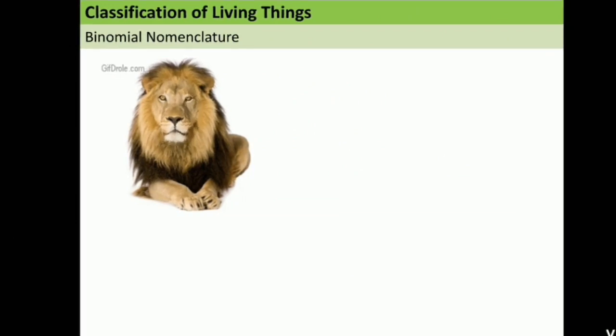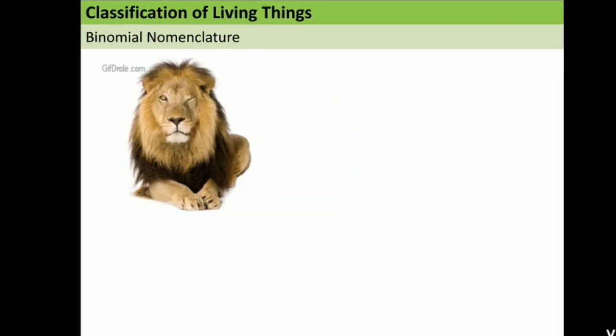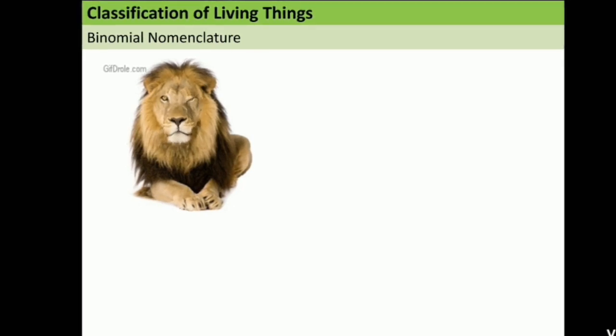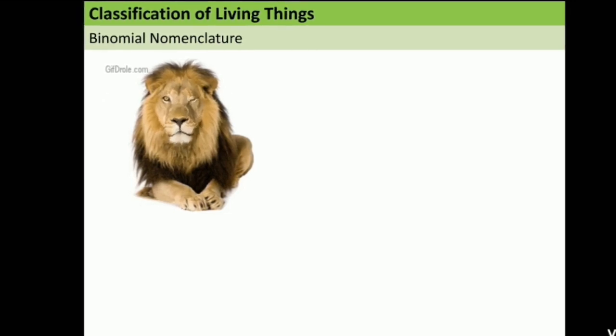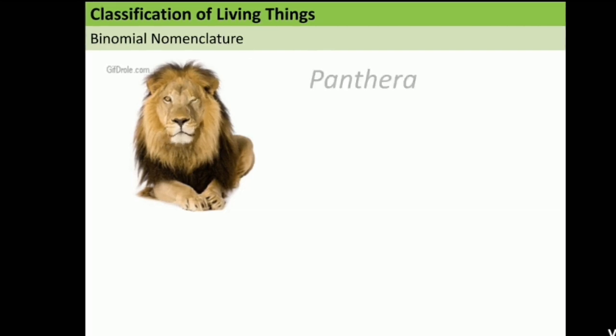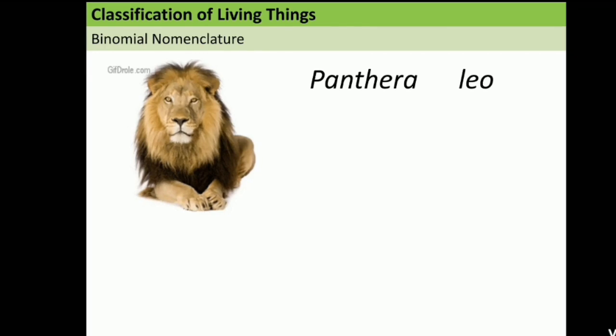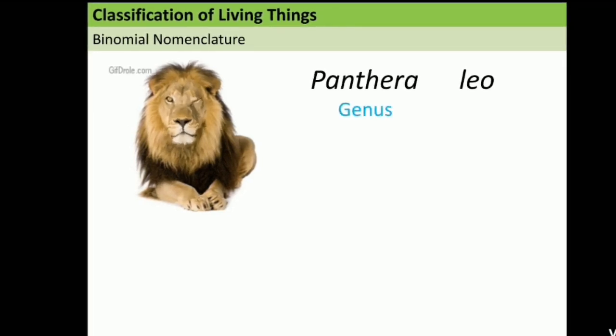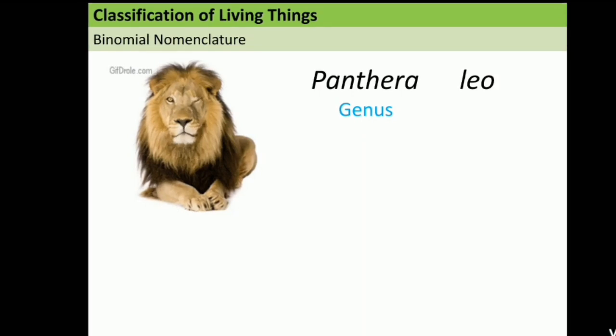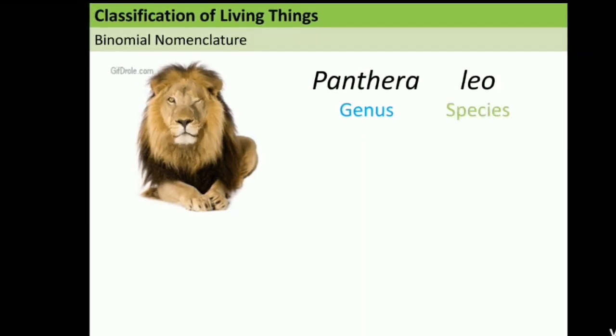Binomial nomenclature is the naming system by using the Latin name for the organisms. It consists of the word bi, it means two, nomial it means name, and nomenclature it means naming system. For example, for this animal, the name is panthera leo. Panthera is from the word of the genus and leo is the species.